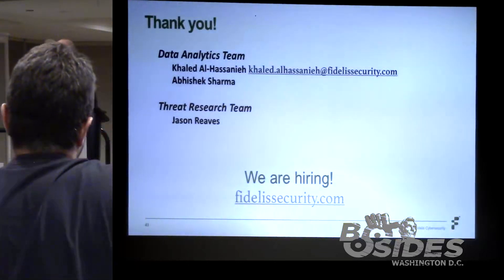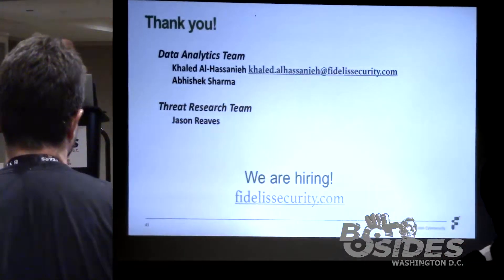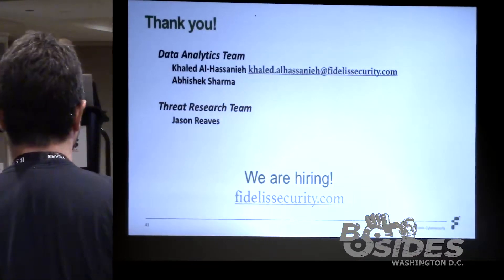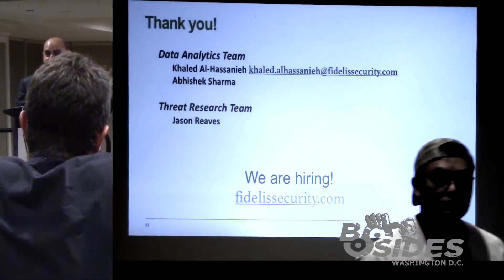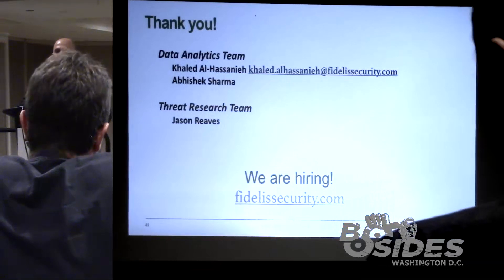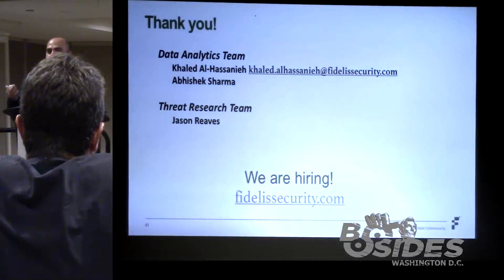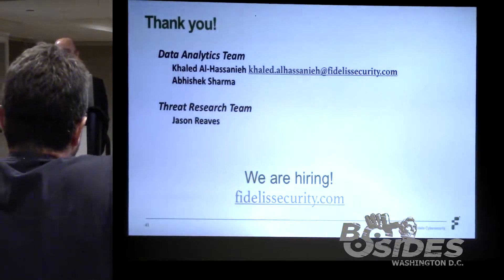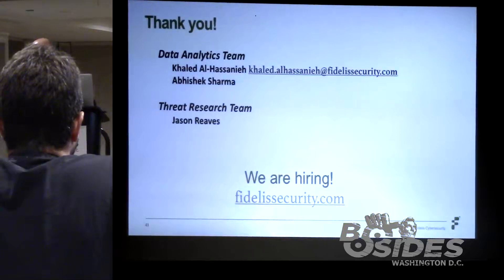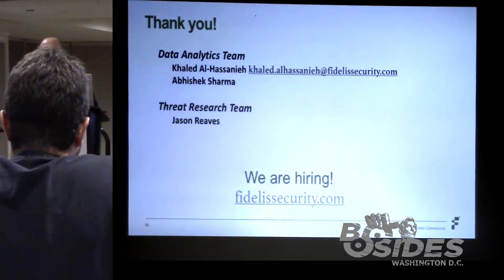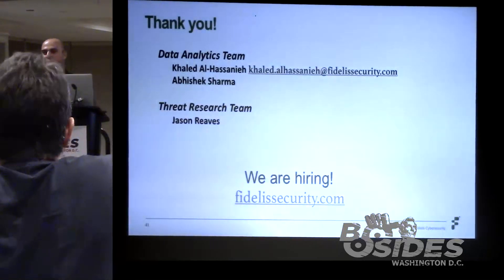Q: Your benign set seems biased toward the most popular sites from Alexa. Does your model still work with less popular but still benign sites that might have sketchier hygiene? A: It's not only the Alexa 10,000 — we also use the census, which has millions of certificates not necessarily the most popular. We sample from those. The census has flags for whether certs are trusted or not. There might be a little mislabeling, but we're relying on the fact that the percentage of malicious certificates among trusted certificates is low.